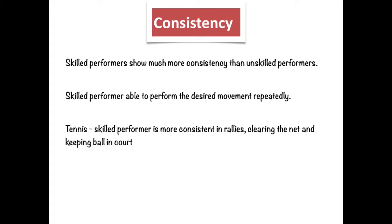Consistency is really all about the athlete being able to execute skills at high quality regularly — performing their skills to a high level all the time. Tennis is a great example because it's characterised by long rallies, clearing the net, and keeping the ball on the court. Tennis players at a high level display consistency every time they take the court, as they often have to hit the ball over the net many, many times in a single game.